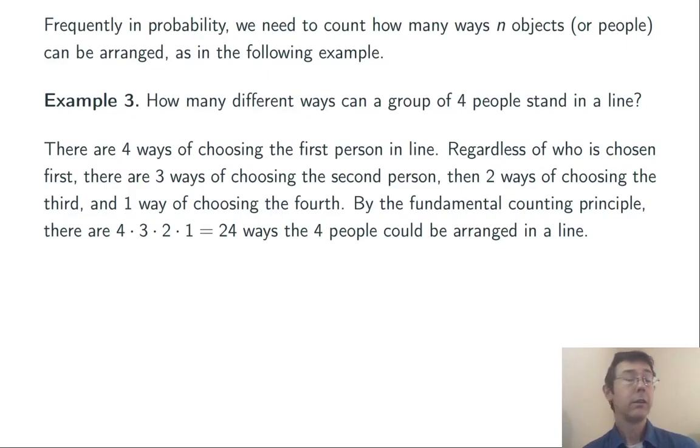So we're going to use the fundamental counting principle. There's four different choices for the first person in line, three for the second, two for the third, and one for the fourth. So overall, we have four times three times two times one, or 24 ways that the four people can be arranged in the line.